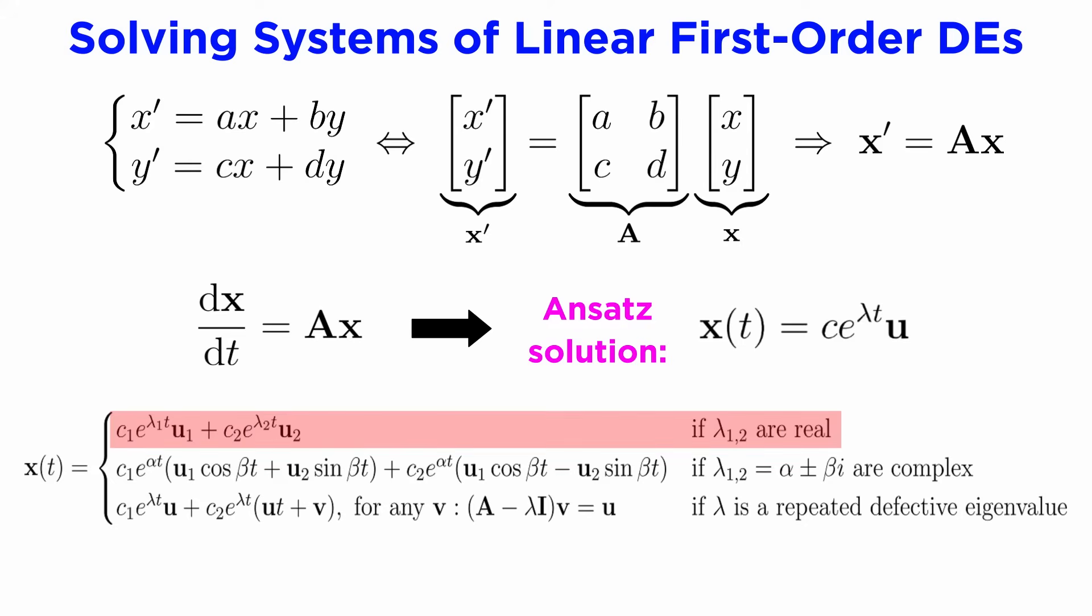Notice that when matrix A has real eigenvalues, we can use our ansatz solution directly, and when the eigenvalues are complex, the solution is a little more cumbersome, but it can be done using Euler's formula all the same.